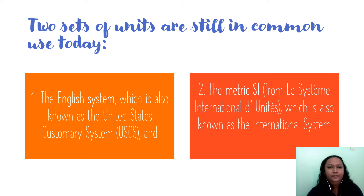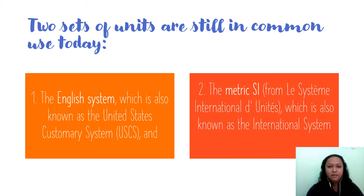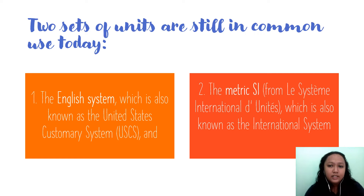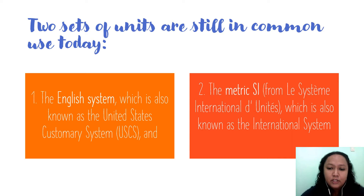In our subject, we have two sets of units that are still commonly used today. The first one is the English system, which is known as the United States Customary System. The second one is the metric system, or what we call SI — the International System of Units. Most problems in thermodynamics are expressed in the English system, so you need to convert properly.